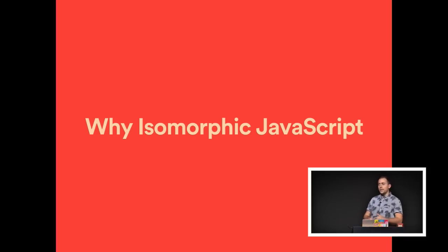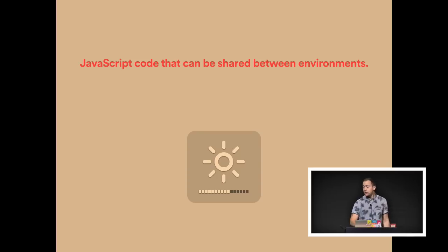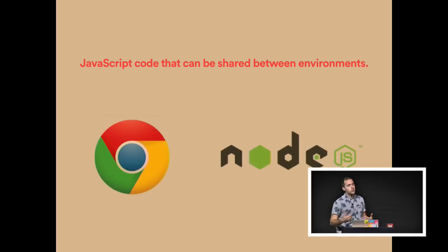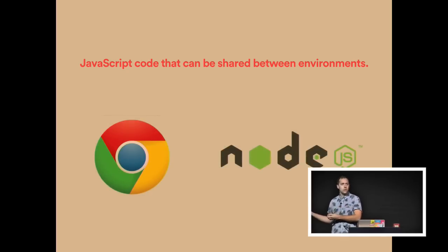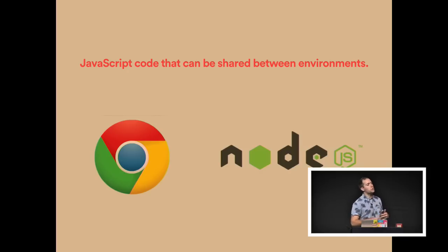Before we can really discuss why isomorphic JavaScript, we need to understand what it is. It's kind of a big fancy word, but what it really means is simply JavaScript code that can be shared between environments. I'm mostly interested in sharing code between the web browser and the server, like Node.js. But there are tons of different JavaScript platforms out there in the world today.